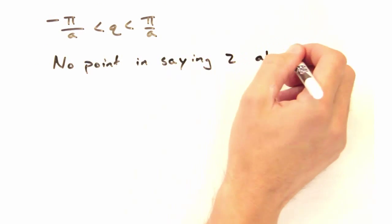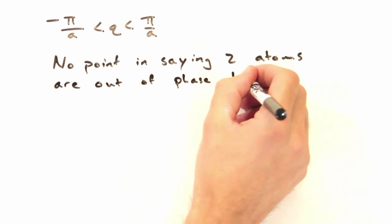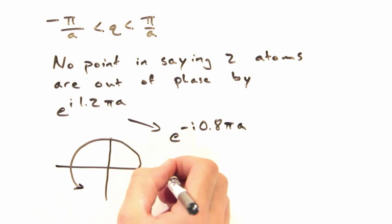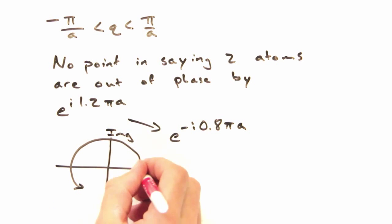Mathematically speaking, there's no point in saying two atoms are out of phase by 1.2 pi, because a phase difference of minus 0.8 pi gives us the same ratio for the displacement of the atom at position n plus 1 over the displacement of atom at position n.